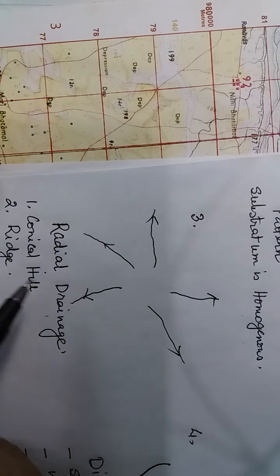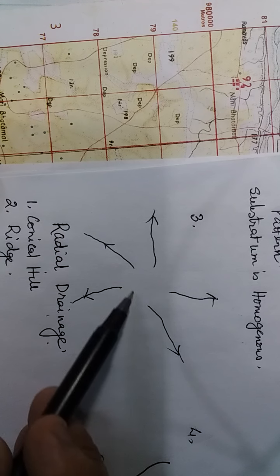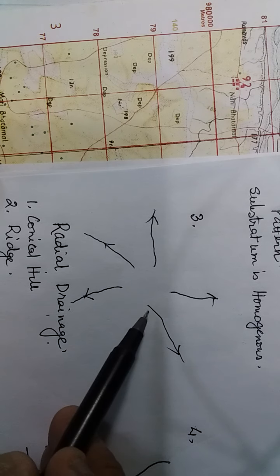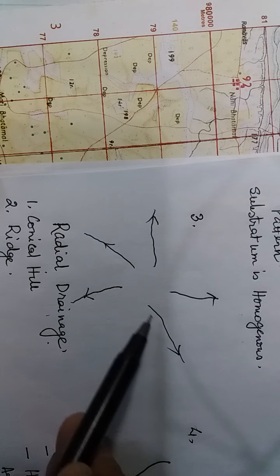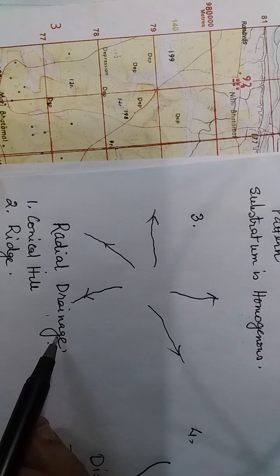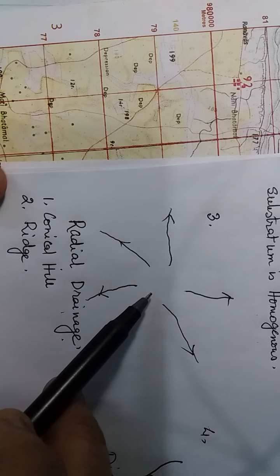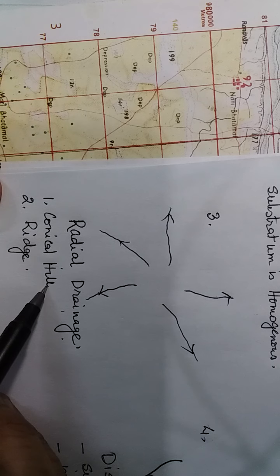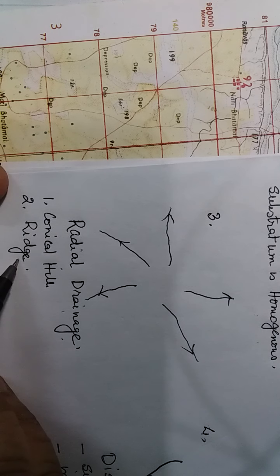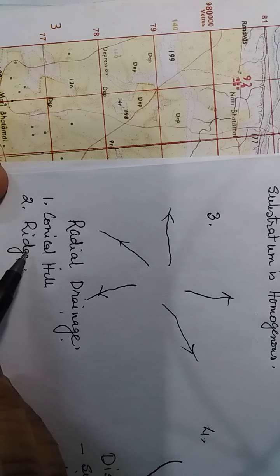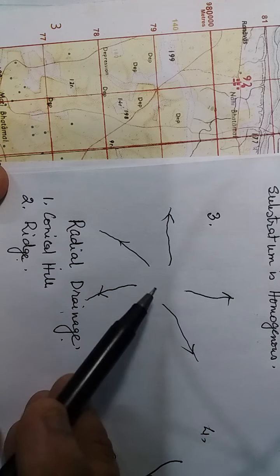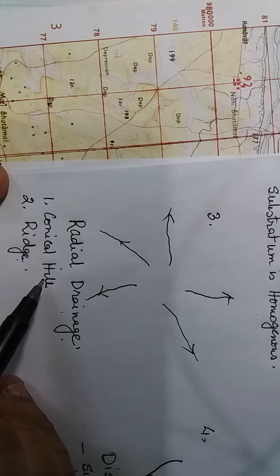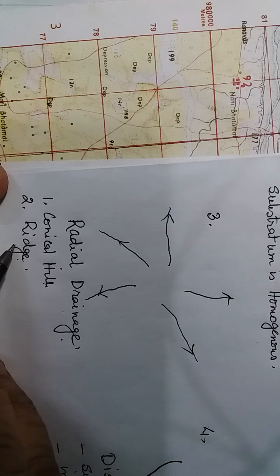The third type is called radial drainage. Streams flow out from a central region in all directions — that is why it is called radial pattern. This type of drainage is associated with two relief features: either a conical hill or peak, or a ridge. By seeing the radial drainage pattern, we can understand the associated relief feature.